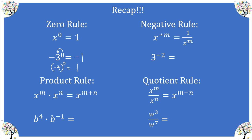The negative rule says that if you have a negative exponent, you're going to reciprocate the factor to the opposite side of the fraction bar — flip it to the opposite side — and then make the exponent positive. Here we have a base of three raised to the negative two. We take this factor of three, move it to the denominator, make the two positive, and put a one on top. Three times three gives us one-ninth, so three to the negative two is really one-ninth.